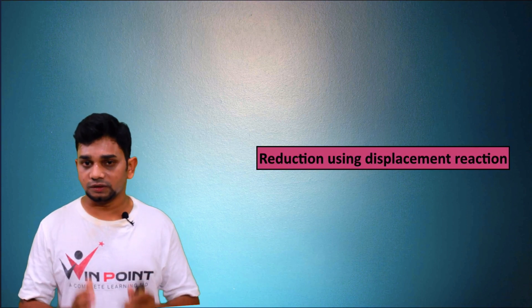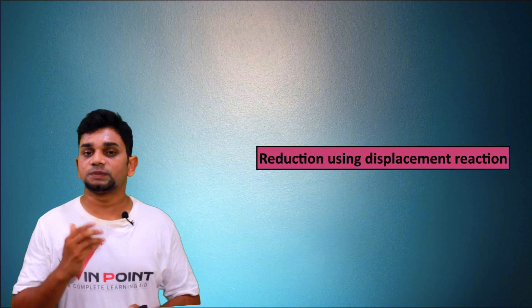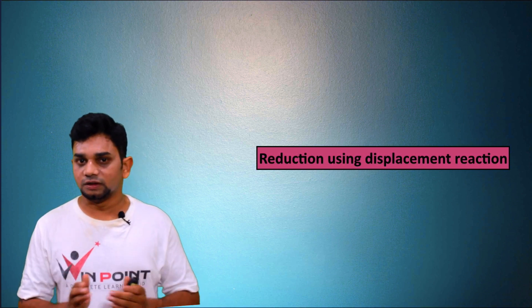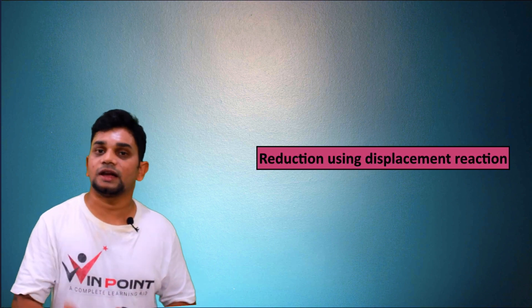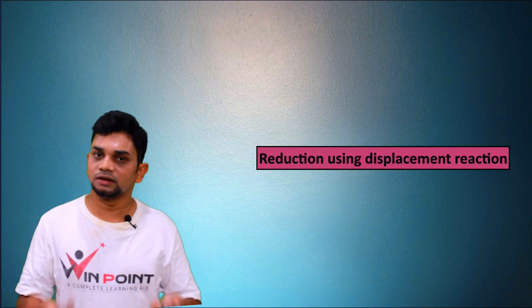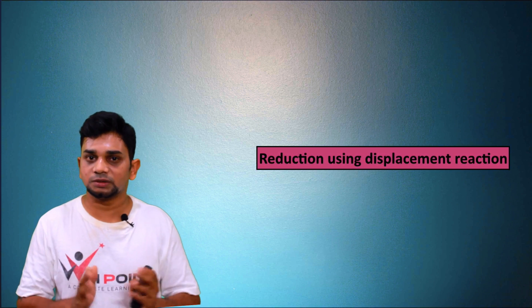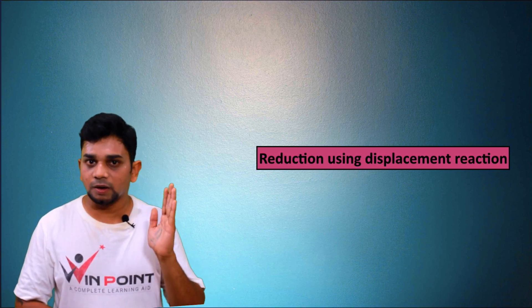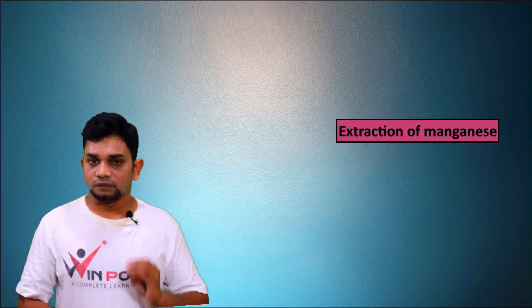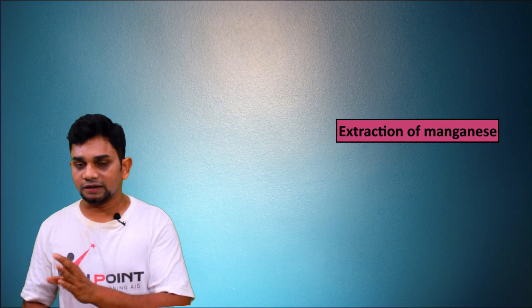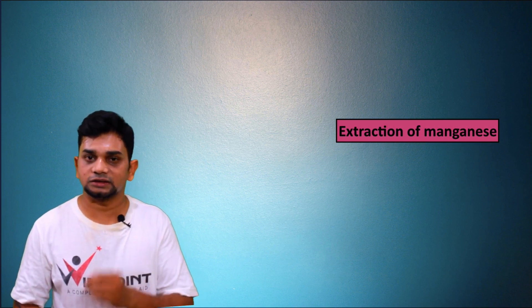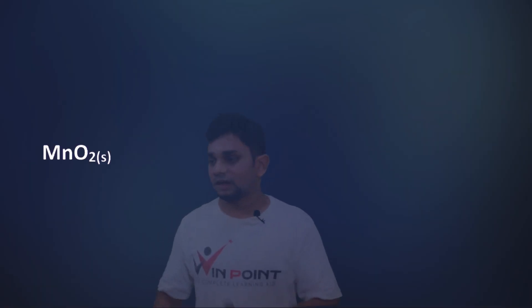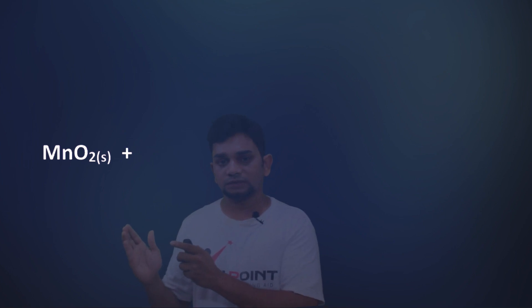Next we discuss reduction using displacement reaction, and specifically the extraction of manganese. In a displacement reaction, the more reactive element replaces the less reactive element. We start with MnO₂, which is the ore of manganese, and add aluminium (Al). Aluminium is more reactive than manganese.